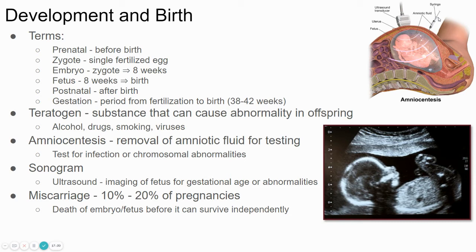Sometimes the pregnancy doesn't complete. Sometimes the fetus doesn't grow and develop normally and stops growing — that's what a miscarriage is called. It's pretty common: about 10% to 20% of pregnancies end in a miscarriage. A miscarriage is just a term for when the embryo doesn't survive and can't survive independently.